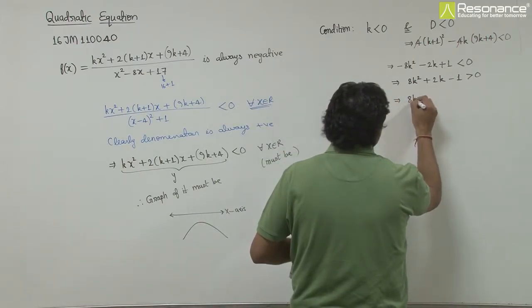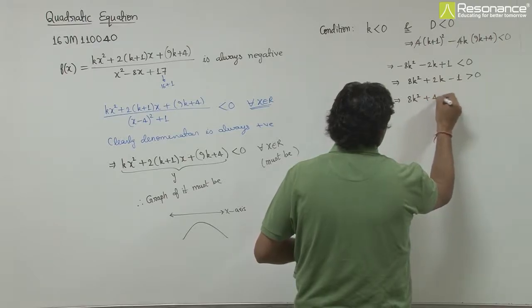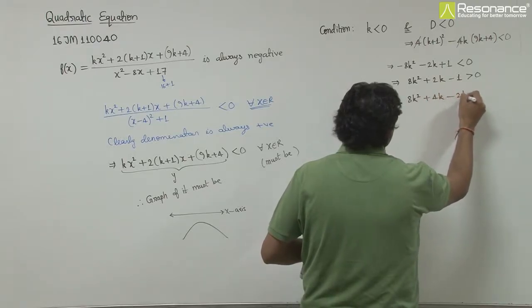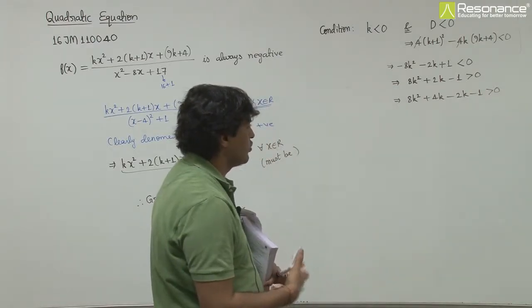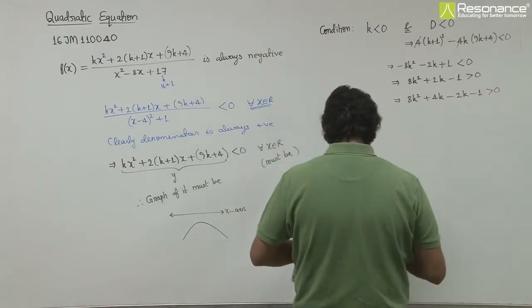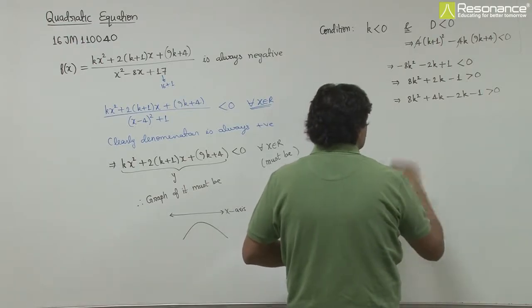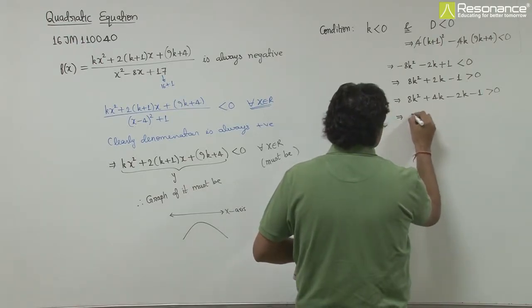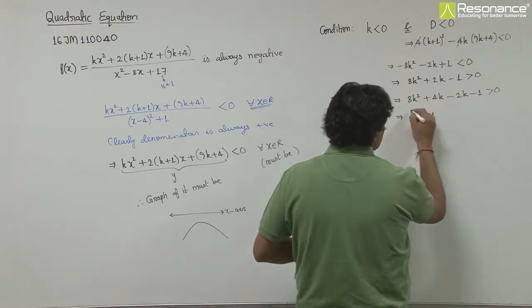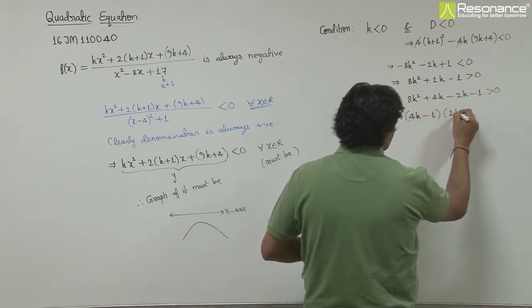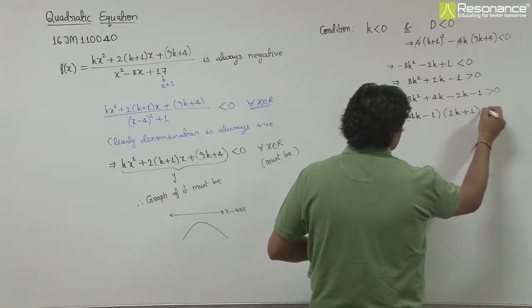Writing 2k as 4k - 2k, taking 4k common, the factors will be (4k-1)(2k+1) greater than 0.